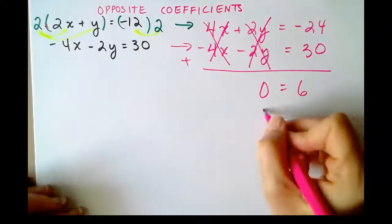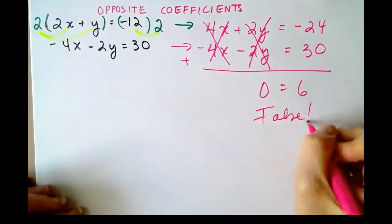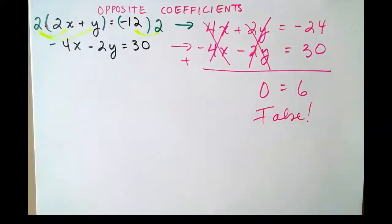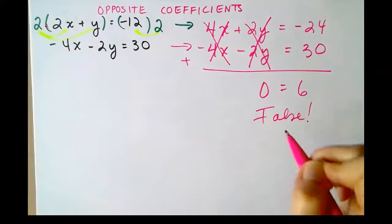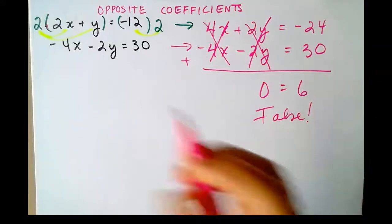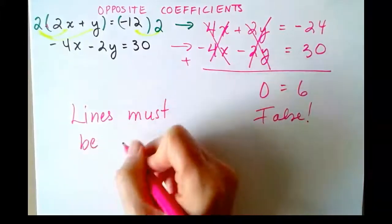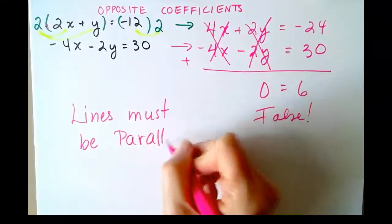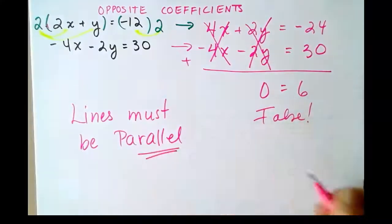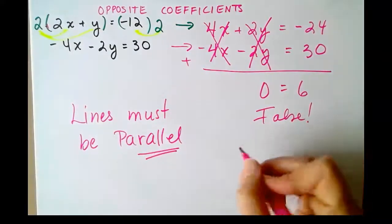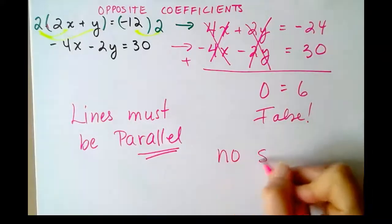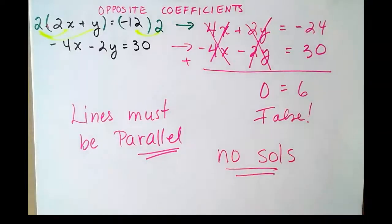Is this true or false? It is false. And like we learned in class, if everything cancels on one side completely and we get a false statement, we know that these two lines must be parallel. And of course, parallel lines will never intersect. Therefore, there are no solutions for this system because the lines are parallel.